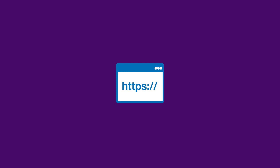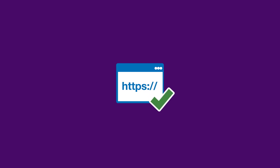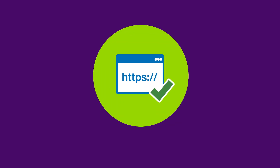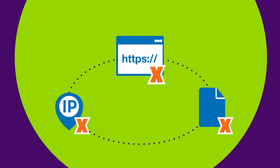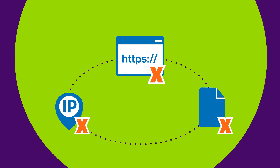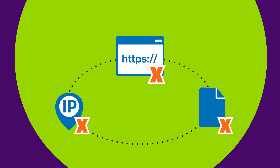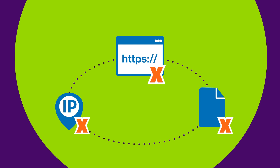What otherwise may seem like a perfectly fine URL, if analyzed in a vacuum, may actually be associated with a malicious IP address or file. That relation impacts the reputation score of the URL in a guilt-by-association model, as it may be directly involved in an attack in the future.